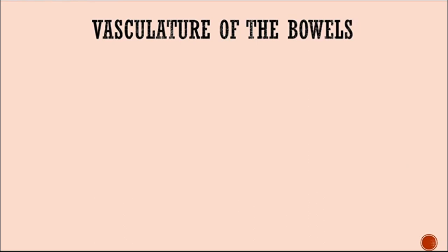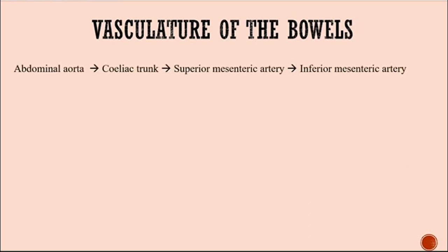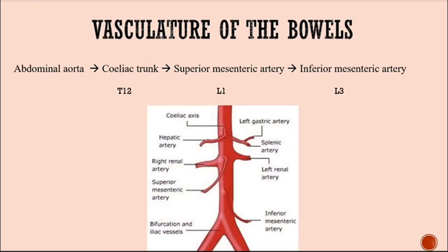All arise from the abdominal aorta. First you have the celiac trunk, then the superior mesenteric artery, and then finally the inferior mesenteric artery. The celiac trunk is at T12. Going one down you go to L1, and two down you go to L3 for the inferior mesenteric artery. You have the celiac axis on top, then the superior mesenteric artery, and further below the inferior mesenteric artery.